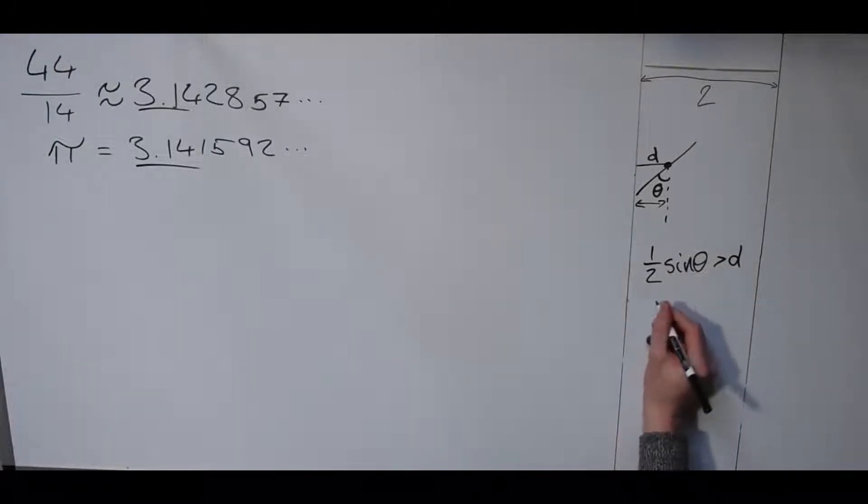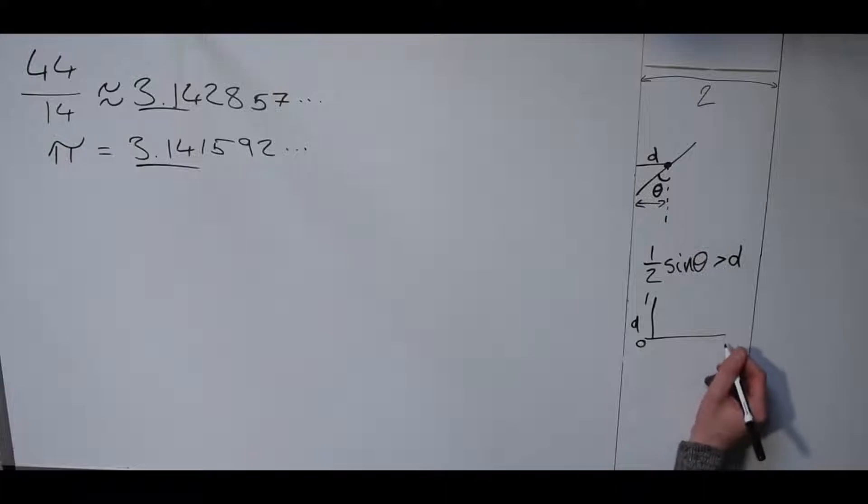If we consider all the possible values of d from zero to one, and all the possible values of theta from zero to pi over two, we want d to be less than half sine of theta.